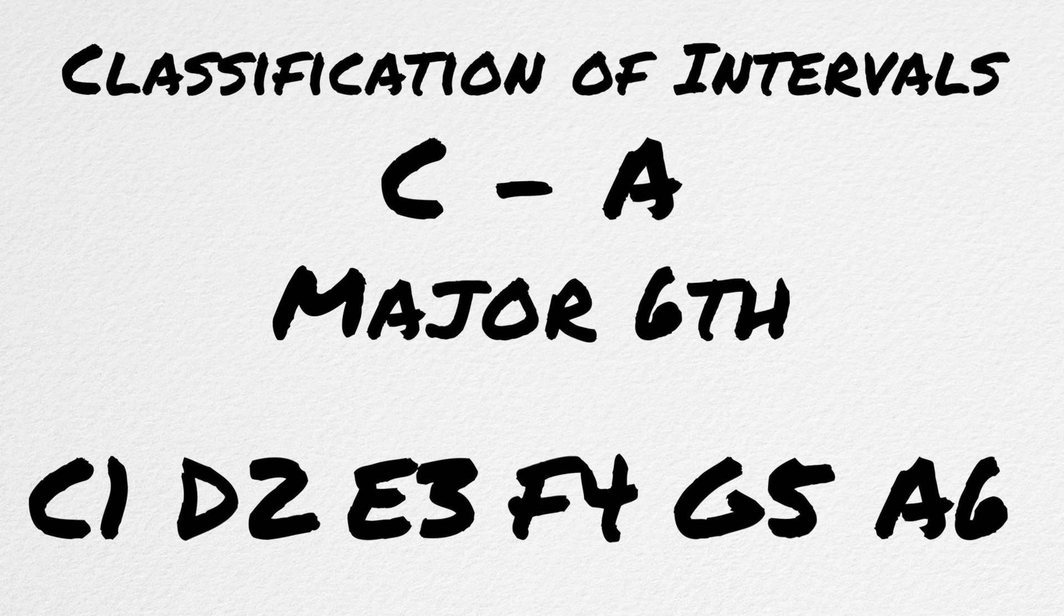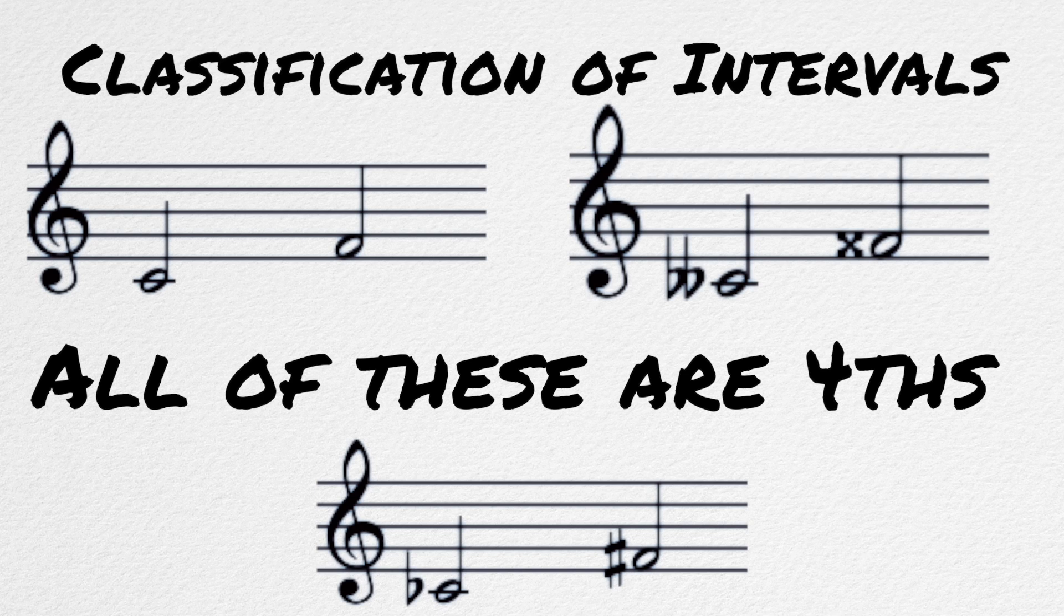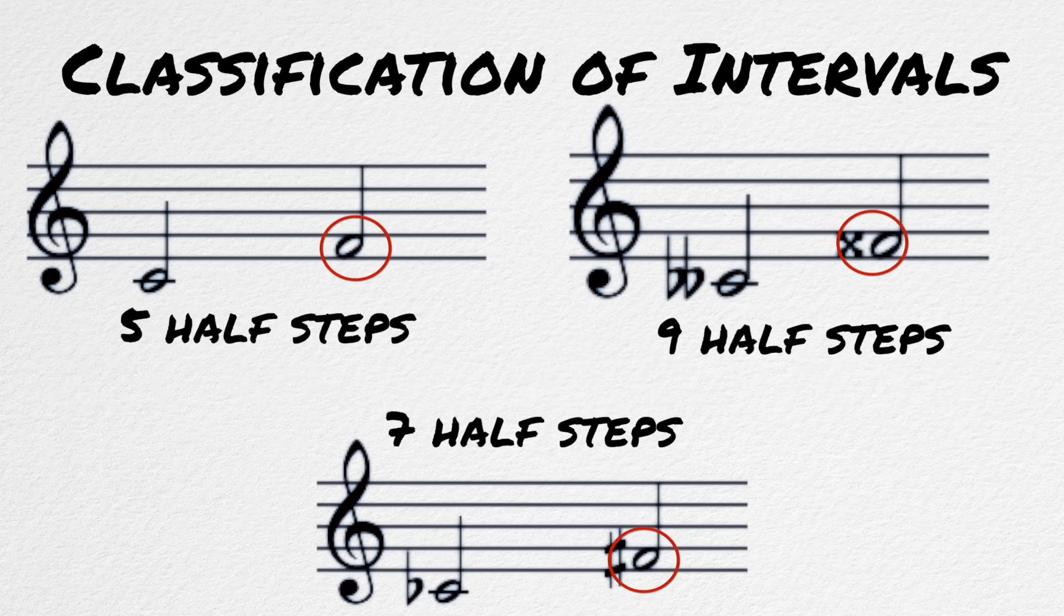This numbering system is independent of the quality of the interval. Any kind of C to any kind of F will be a 4th, regardless of the accidentals or quality of the interval. And this is also independent of the number of half-steps between the two notes. Any C to any F is a 4th, regardless if there is 3, 4, 5, or 6 half-steps between them.